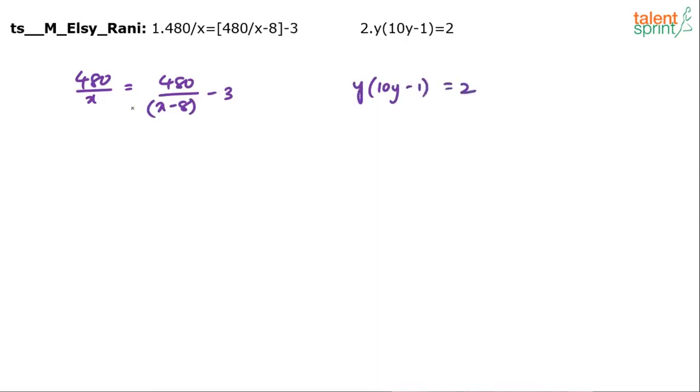Now you just have to cross multiply. I don't worry about anything else. So if I cross multiply what happens? First of all it is like this: 480 by x equals to 480 minus 3 times of x minus 8 by x minus 8.